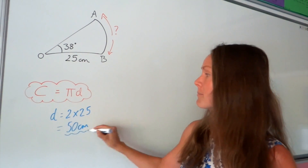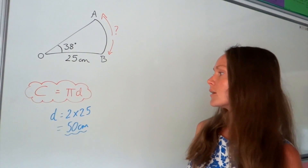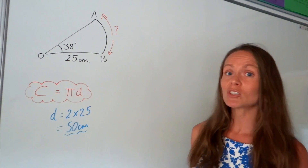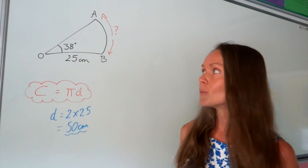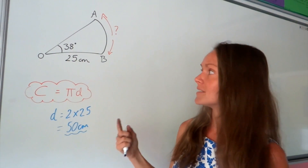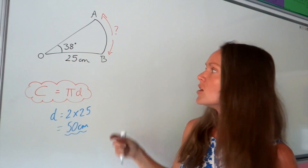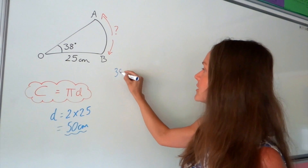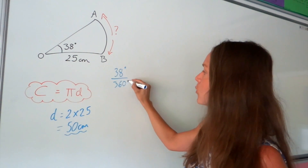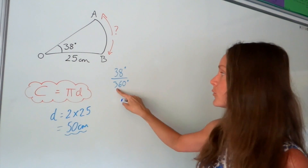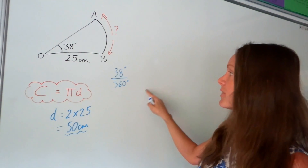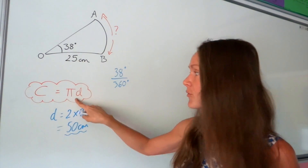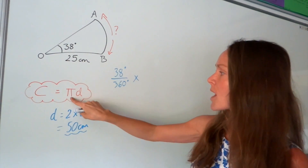If we imagine this sector as a full circle, just like in the first example, we need to work out how much of a circle this sector is — so we find what fraction of a full circle it is using degrees. We already know there are 38 degrees inside the sector, so that's 38 degrees out of 360. Remember it's always out of 360 because a full circle always has 360 degrees. Then we multiply this fraction by the formula for the circumference, so we multiply by pi.